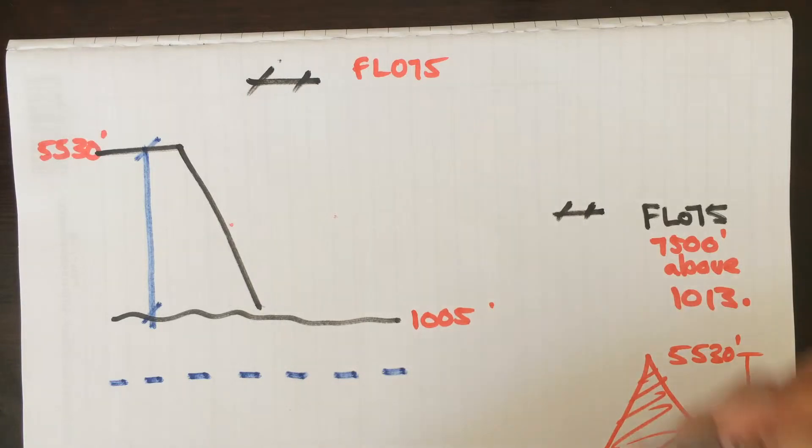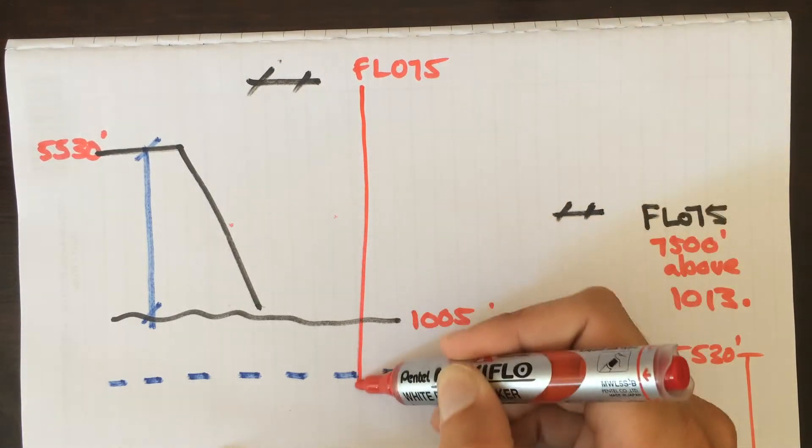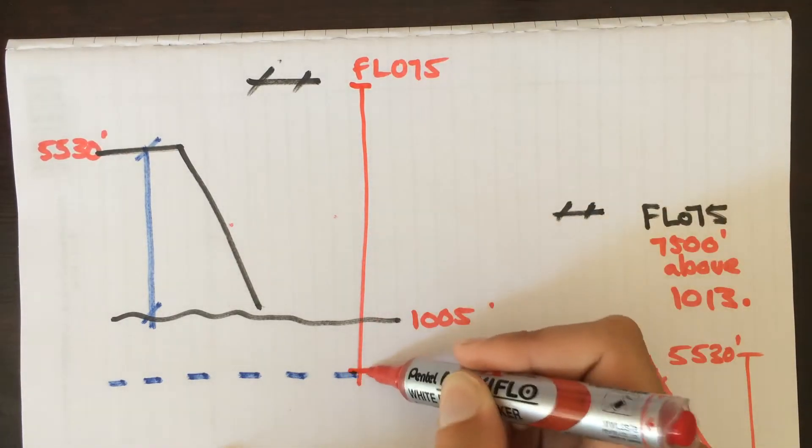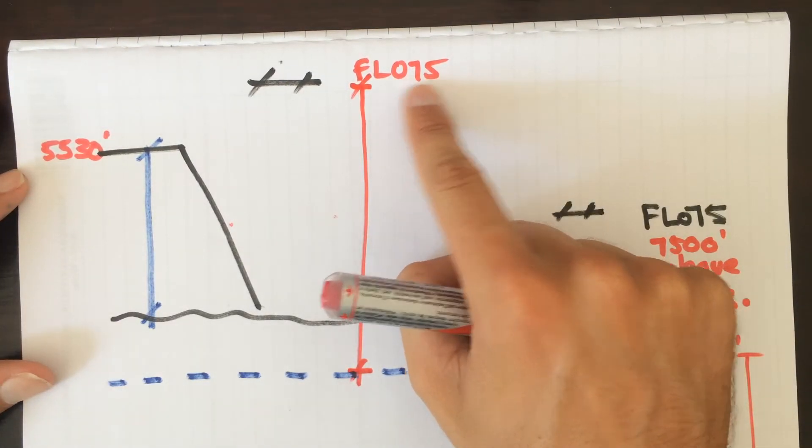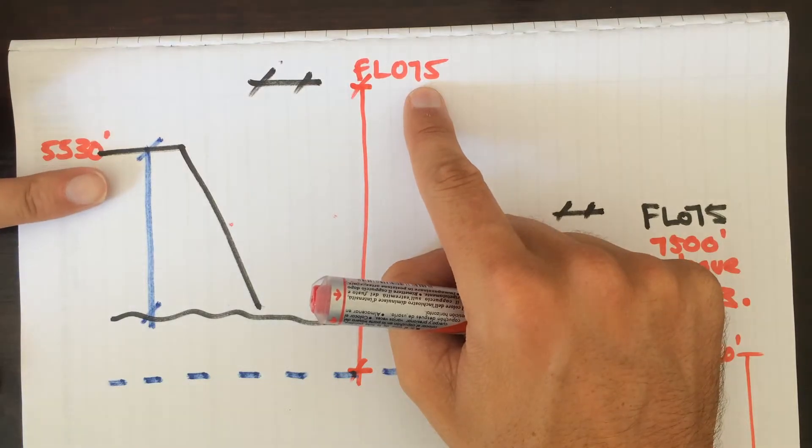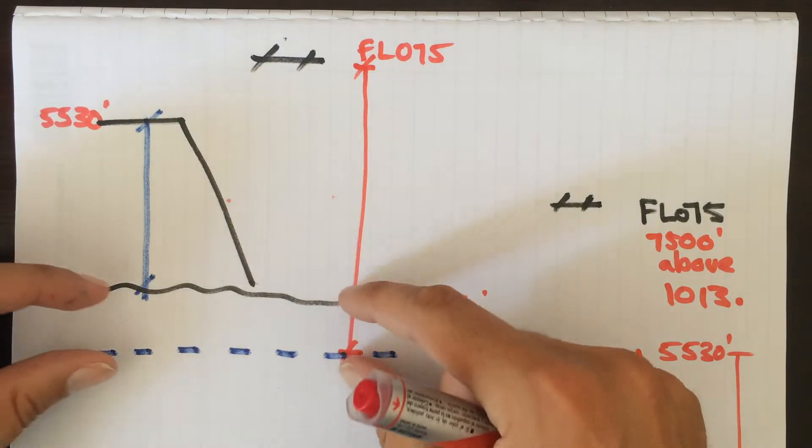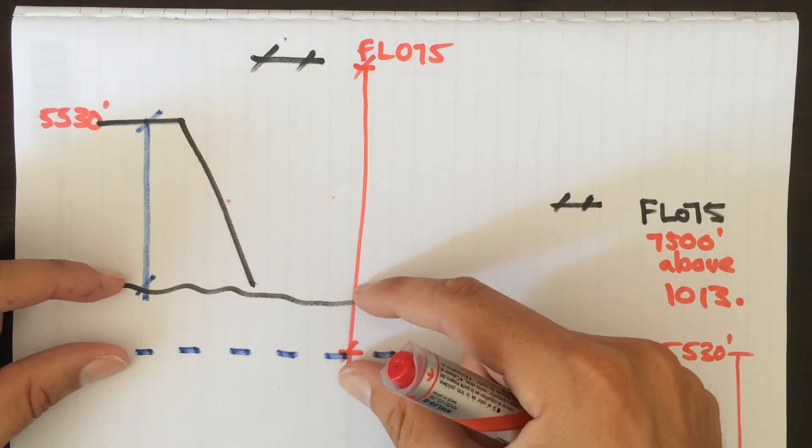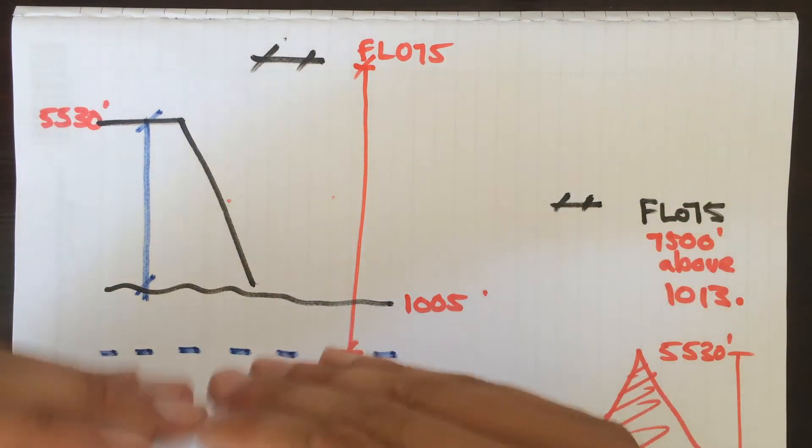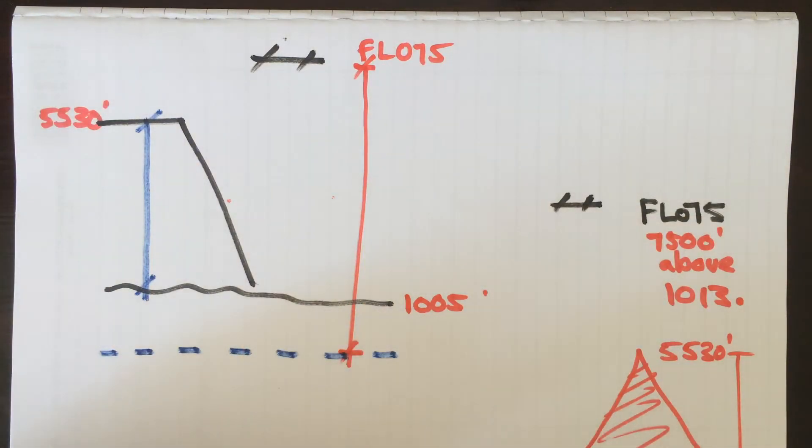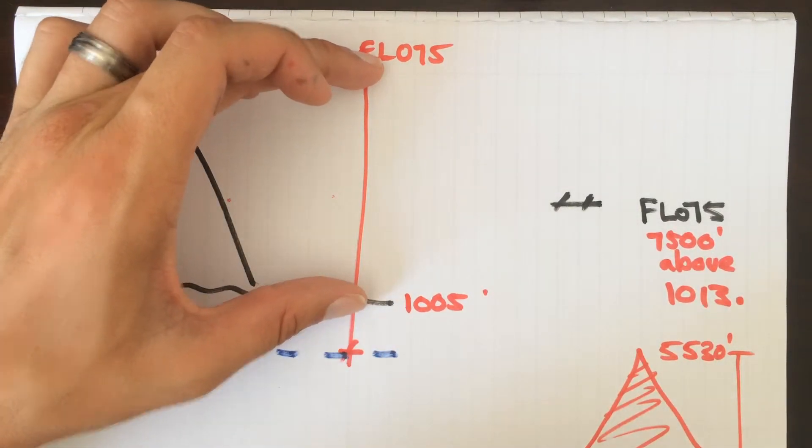So we know that from here to there now is seven thousand five hundred feet. Now a common mistake that guys make on this question is they just take this 75 and make it into seven thousand five hundred and minus five thousand five hundred thirty from it, which in actual fact is not going to be correct because you got this small discrepancy between the two. So what you need to do is you need to get them both onto one equal reference point. You can either get this onto 1013, or you can take this and put it onto 1005. I prefer the last one and that's the one that I'm going to show you.